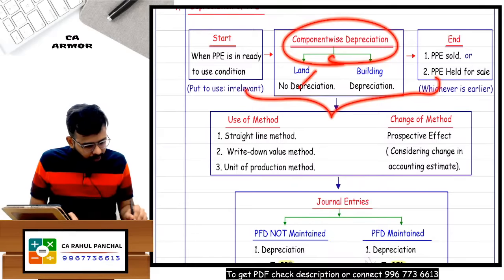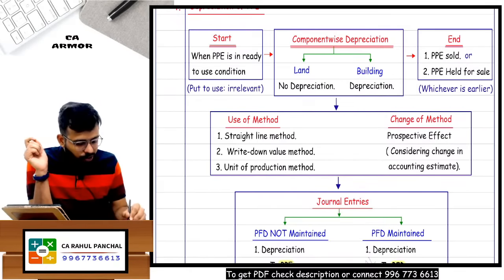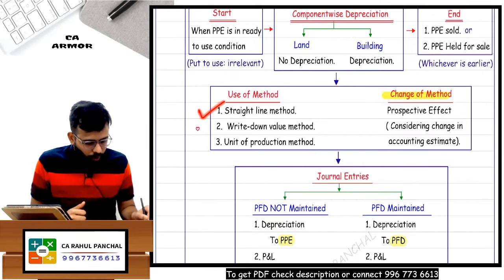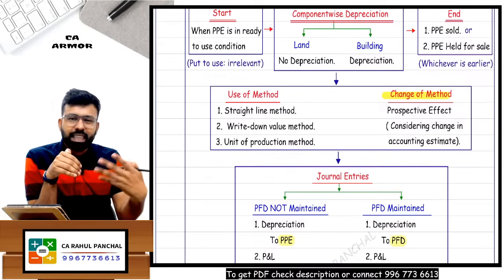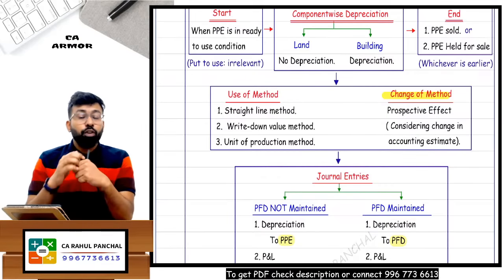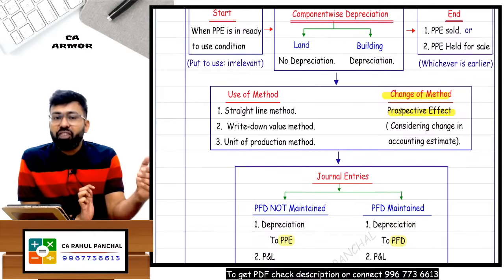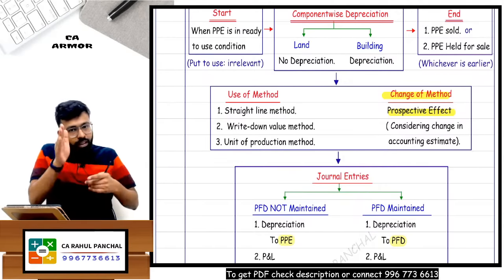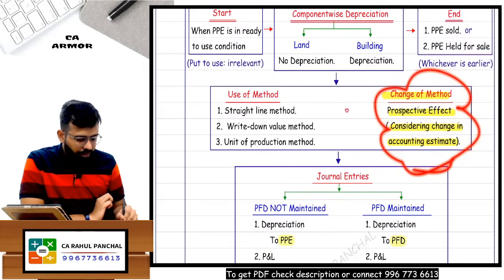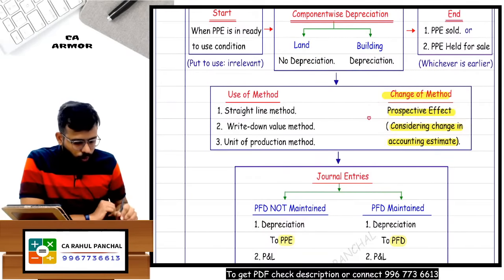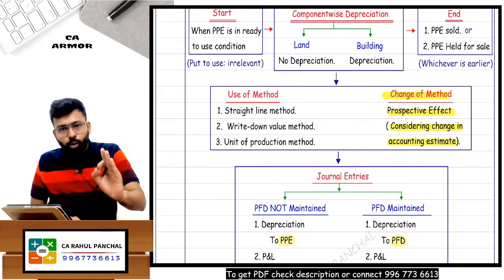During the depreciation period, you can change your method. When you change the method - say you followed SLM for 2 years and now feel WDV better represents your shareholders - there is a change in method. It will have a prospective effect: you will not change financial statements of earlier years. The effect is given from next year onwards, considered as a change in accounting estimate. No retrospective effect.